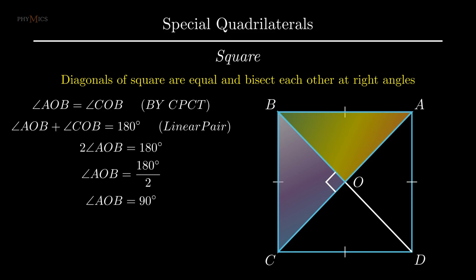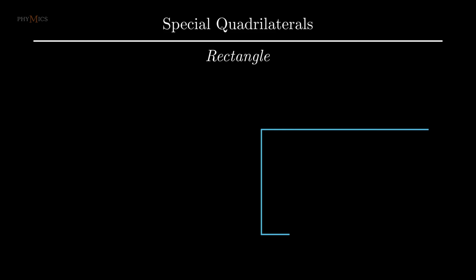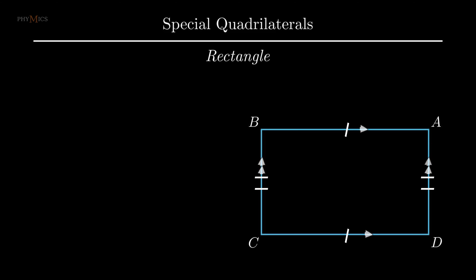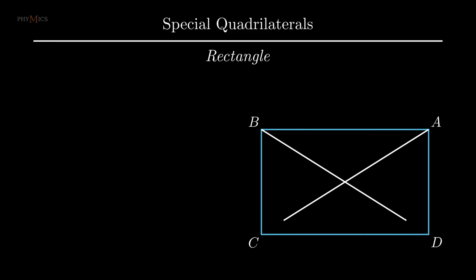Moving on to the next special case of quadrilateral known as rectangle. A rectangle is a polygon with four sides in which opposite sides are equal and parallel. Each vertex angle of a rectangle is a right angle, that is 90 degrees. Diagonals of a rectangle are equal and bisect each other.